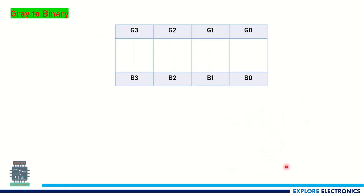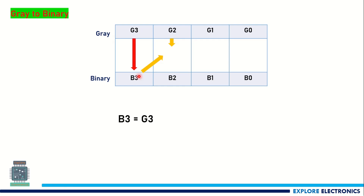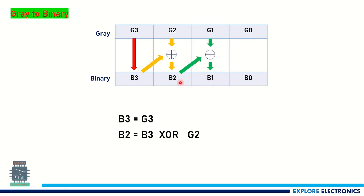Now, how to convert gray to binary. Again, gray is at the top and binary values below. We start with MSB — the binary number B3 will be the same as G3. The next bit B2 is obtained by XORing B3 with G2. Similarly, B1 is obtained by XORing B2 and G1, and B0 is obtained by XORing B1 with G0.